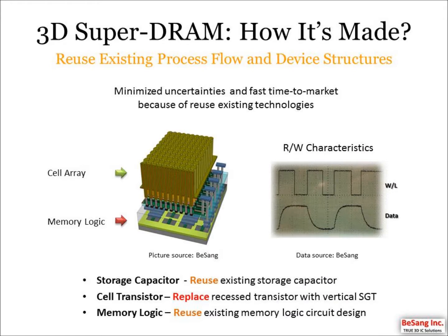3D Super DRAM reuses the proven process flow and device structures used in Planar DRAM. When we compare Planar DRAM and 3D Super DRAM, the storage capacitor and memory logic circuitry are the same. The only difference is the cell transistor — Planar DRAM normally uses a recessed transistor, and 3D Super DRAM utilizes a vertical SGT.